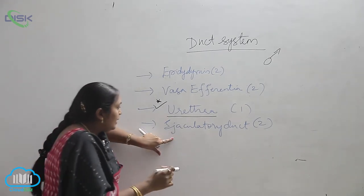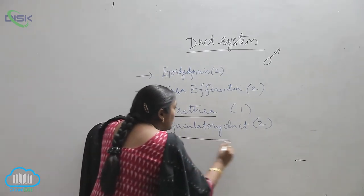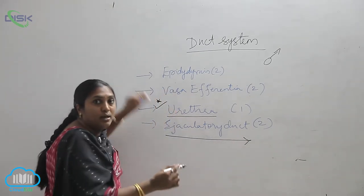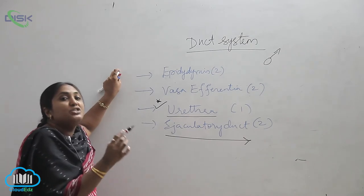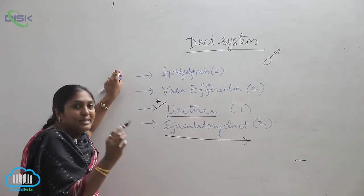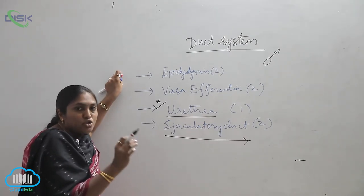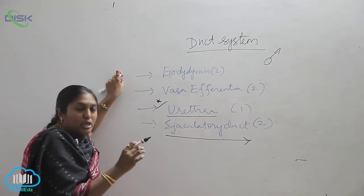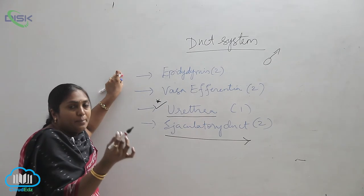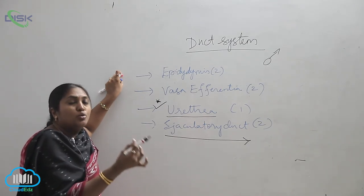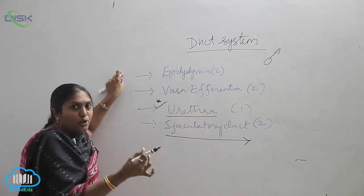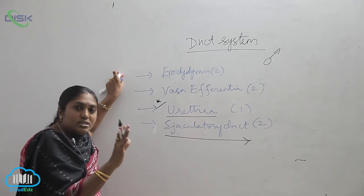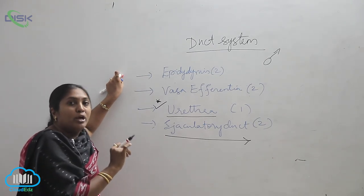So in the name itself it is very clear—the ejaculatory duct is helping the testis for the release of the sperms into the female reproductive system through the penis. As I told you, the penis is only seen externally and this is the prominent character of males.